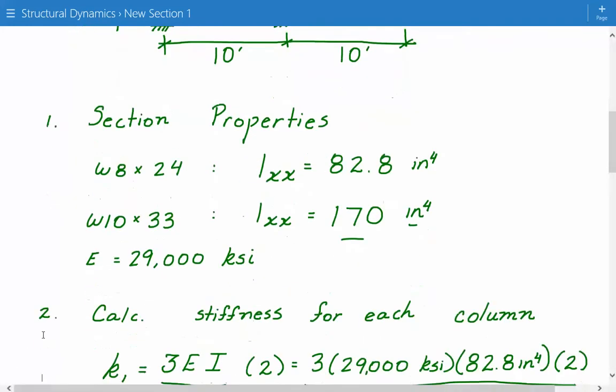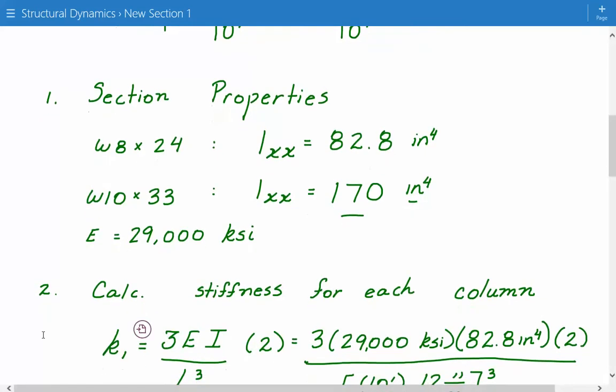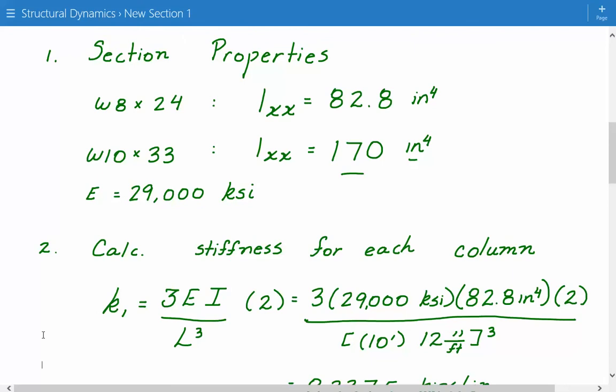The next step will be to calculate the individual stiffness for each column. So in our case, we have two columns that have the same section properties and one that has separate section properties. We have two columns that are W8 by 24 and one that's W10 by 33. So the stiffness for that W8 by 24 column will be 3 times E times I divided by L cubed. And since we have two of these, W8 by 24, we multiply it by 2.